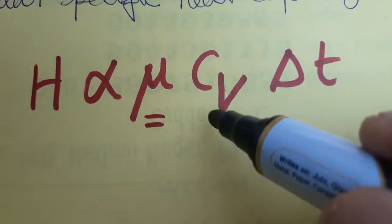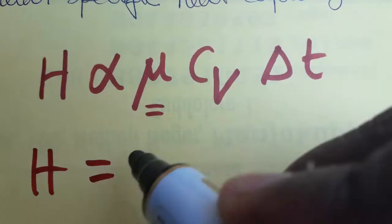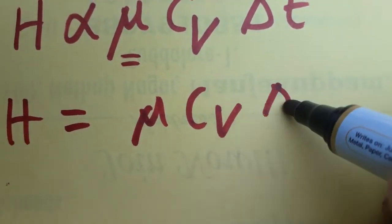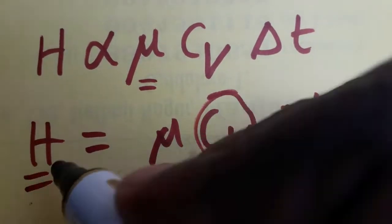Here volume we are maintaining as a constant, so Cv constant volume, and change in temperature. So H is equal to mu times Cv and delta T. This is specific heat capacity, mu is molar mass, delta T is temperature, H is the heat energy.